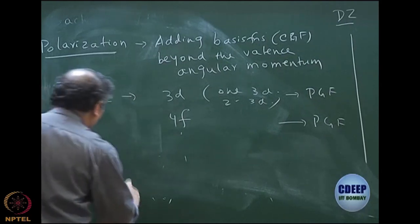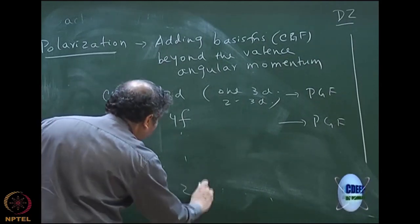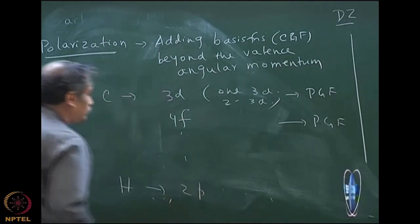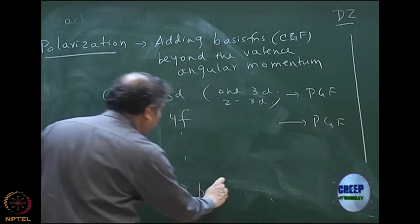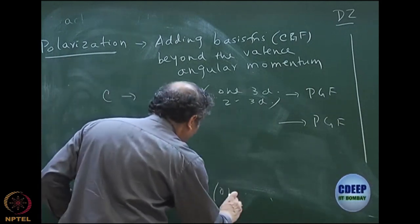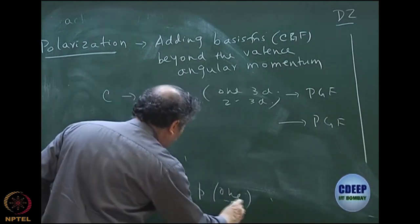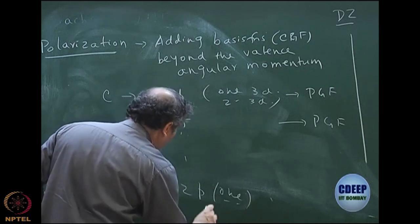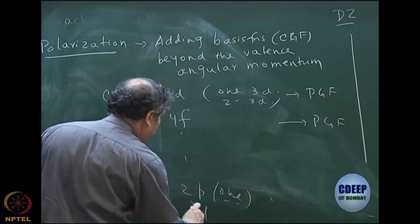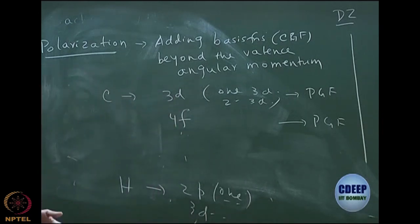For hydrogen, for example, I am going to use 2P functions — maybe one or two, doesn't matter. I can also use D, 3D, F, and so on, even for hydrogen.